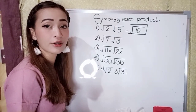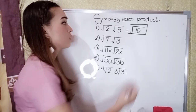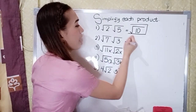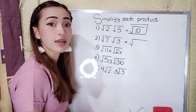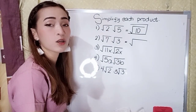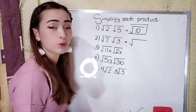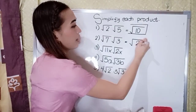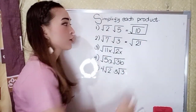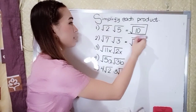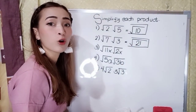For number two, we have the square root of seven times the square root of three. Again, place the square root symbol and multiply the radicands: seven times three is twenty-one. Since twenty-one is not a perfect square, our answer in number two is square root of twenty-one.